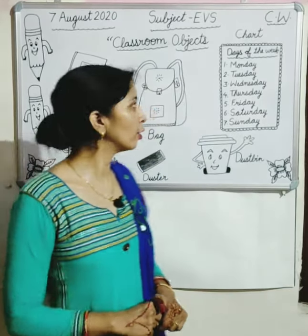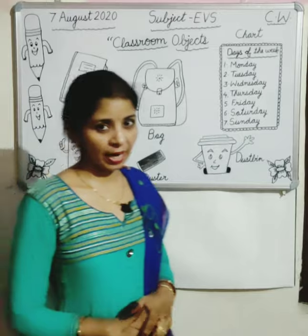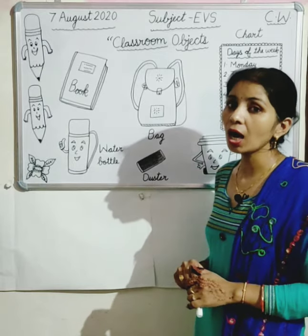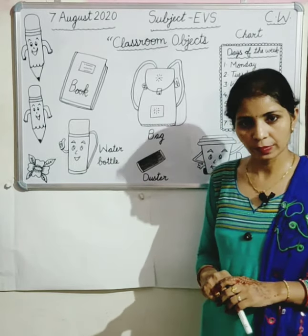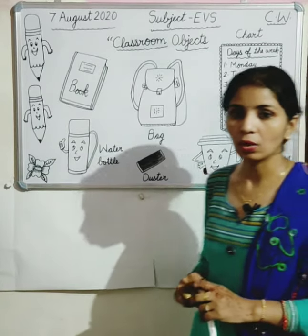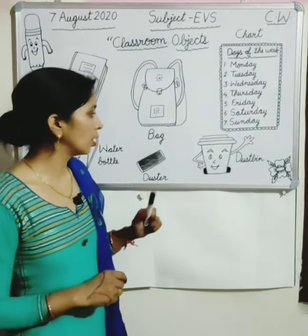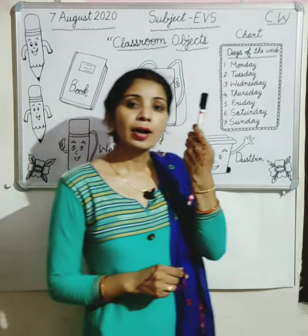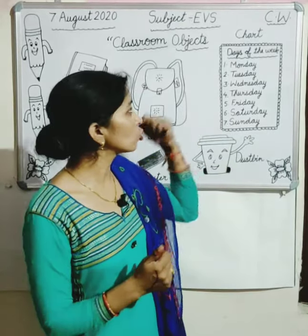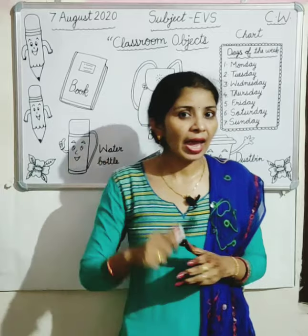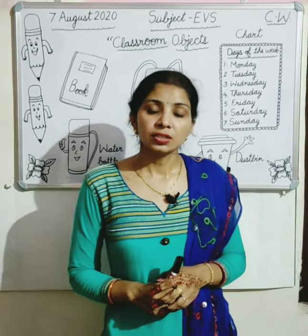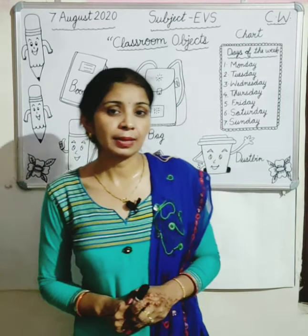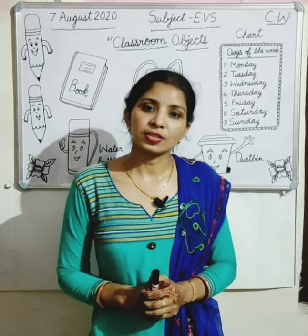I hope you understood classroom objects. Look here again. This is a book. This is a water bottle. This is a bag. And this is a duster. This is a dust bin. This one is a chart. And this is a marker. Classroom objects ke ilaava aur bhi hote hain — ceiling fan, table, chair, aur mirror bhi hoti hain na. Aap sab ne dekhi hain jab school gaye hain. Ye sab kya hain? Classroom objects.